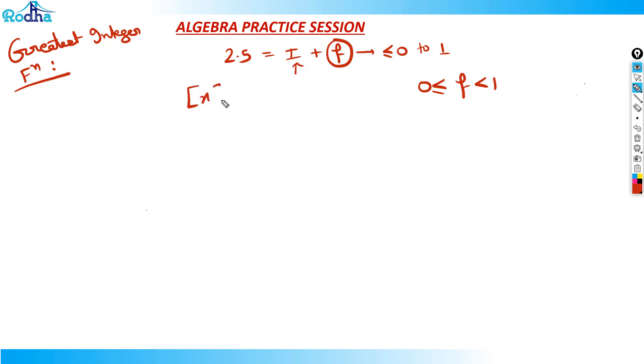So greatest integer function of any number, any x - if we have this 2.5 as x actually, its greatest integer function will always be i. This is the meaning of greatest integer function.